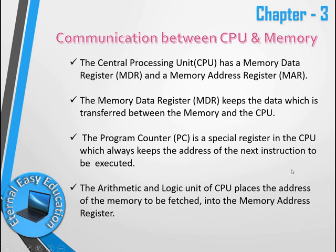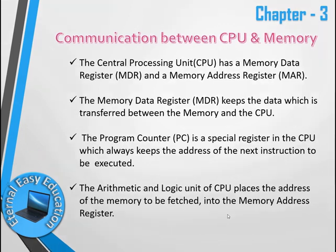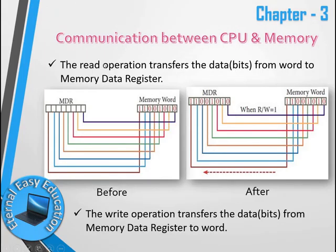The address in the Memory Address Register will be updated. The source of the memory address is the CPU. The memory address will then be read, and the data register is used for the read operation, transferring data to the Memory Data Register.